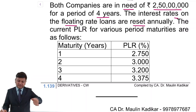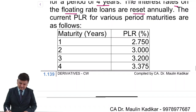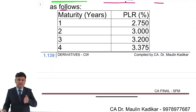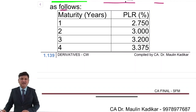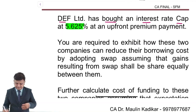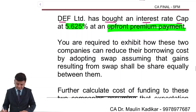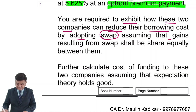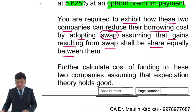So every year the floating rate of interest will change. The current PLR — this word is very important — spot rate, it has a meaning for various periods of maturity as follows: for one year, two years, three years and four years. DEF has bought an interest rate cap at the rate of 5.625% at an upfront payment of premium. So the premium is paid upfront in one stroke. You are required to exhibit how these two companies can reduce their borrowing cost by adopting SPAC, assuming that the gain resulting from the SPAC shall be shared equally between both of them.